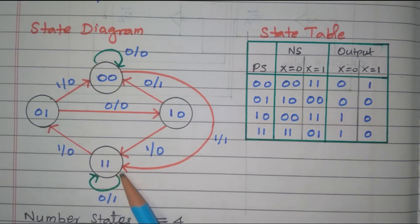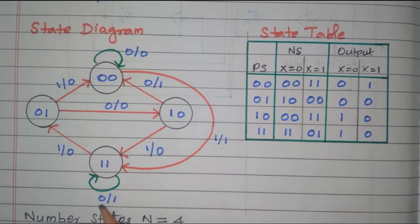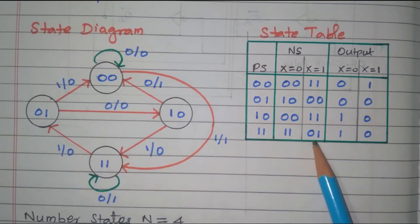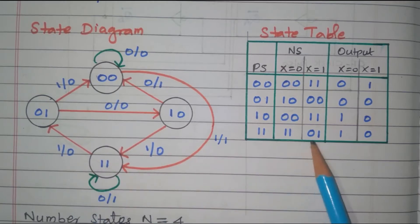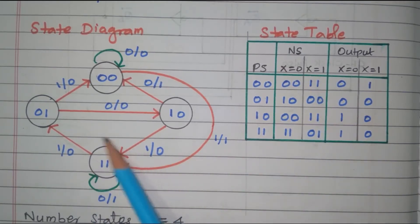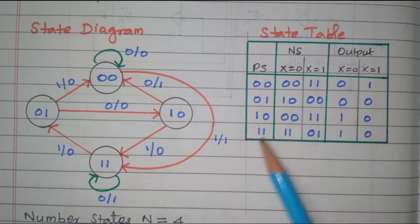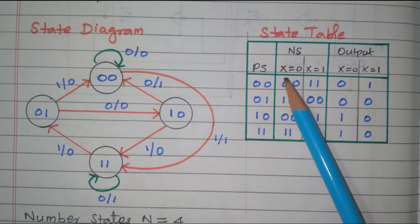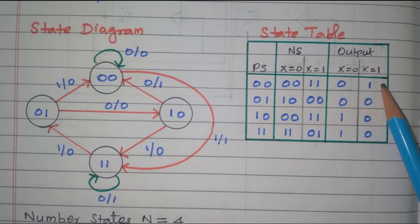The last state 11 goes to 11 itself with input=0, output=1. And 11 goes to 01 with input=1, output=0. So from the state diagram we have now developed the complete state table, showing present state, next state for x=0 and x=1, and output for x=0 and x=1.